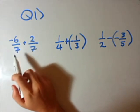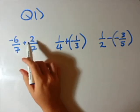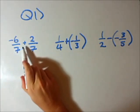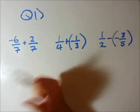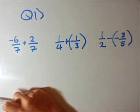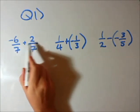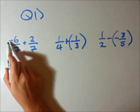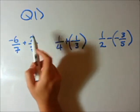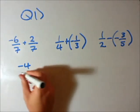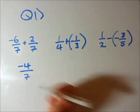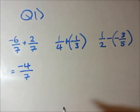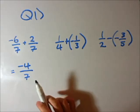We have negative 6 divided by 7 plus 2 over 7. Remember the golden rule: when we're adding or subtracting fractions, we need the denominator to be the same. As they are, we can just do the top process as it looks. Negative 6 plus 2 is negative 4, divided by — remember, because the denominator is the same, we just put that as our denominator. So our answer is negative 4 over 7, and that is in its simplest form.